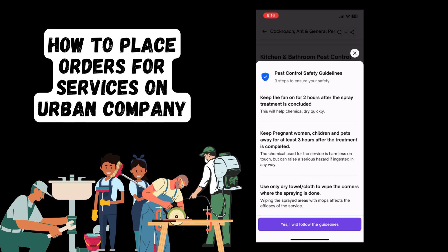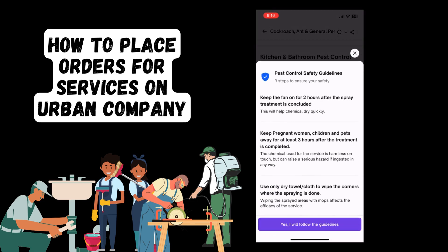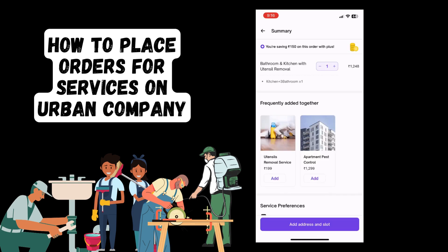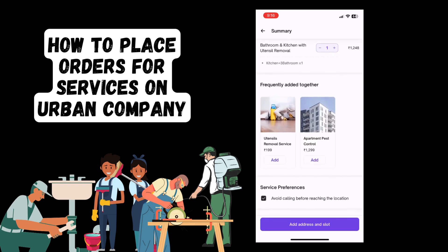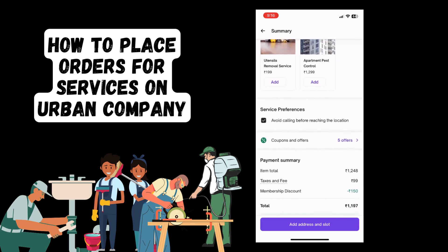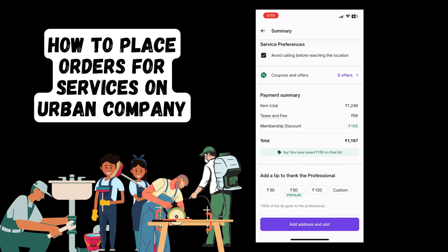For some services, Urban Company requires you to accept and follow their guidelines to ensure the procedure is safe and carried out efficiently. You will now get a summary of your order. Once you have reviewed your entire order, you can scroll down and add any coupons if you would like and if available.